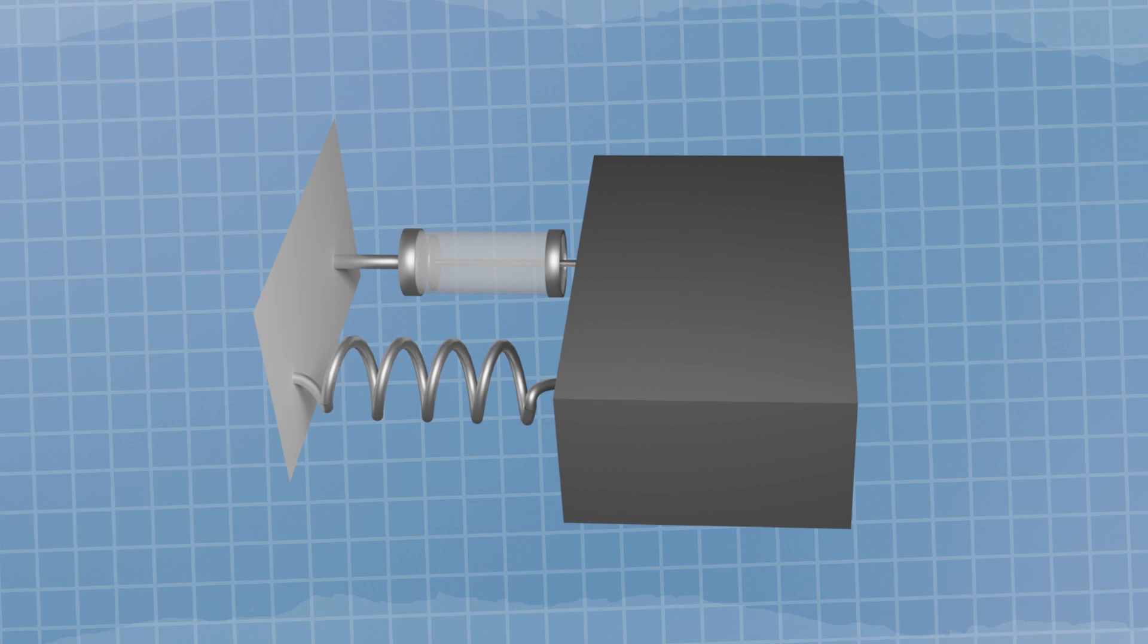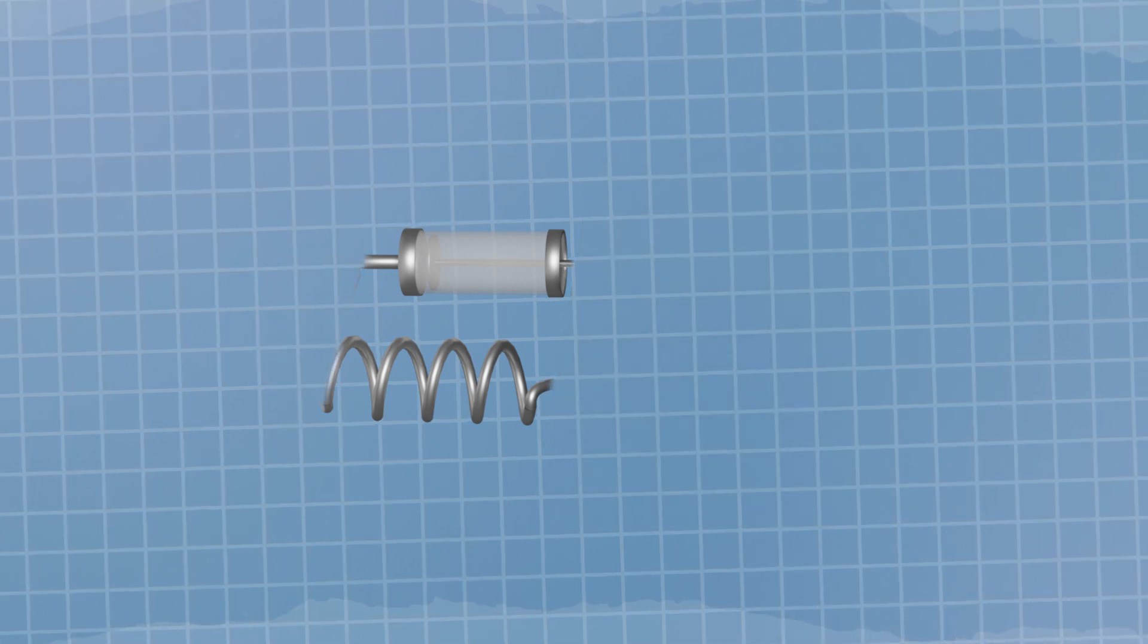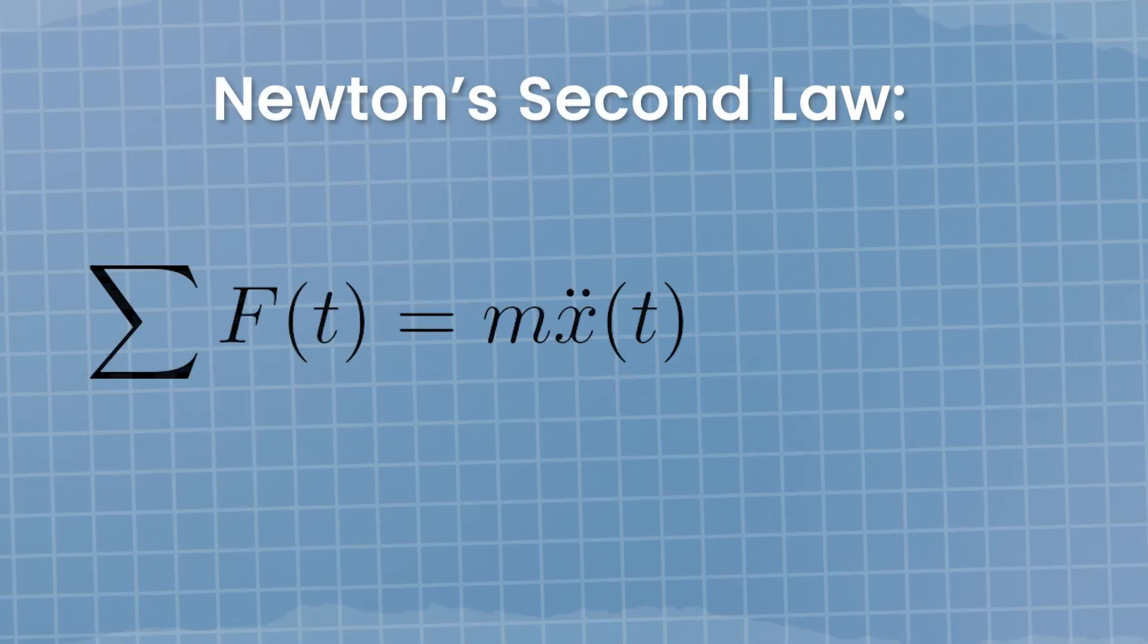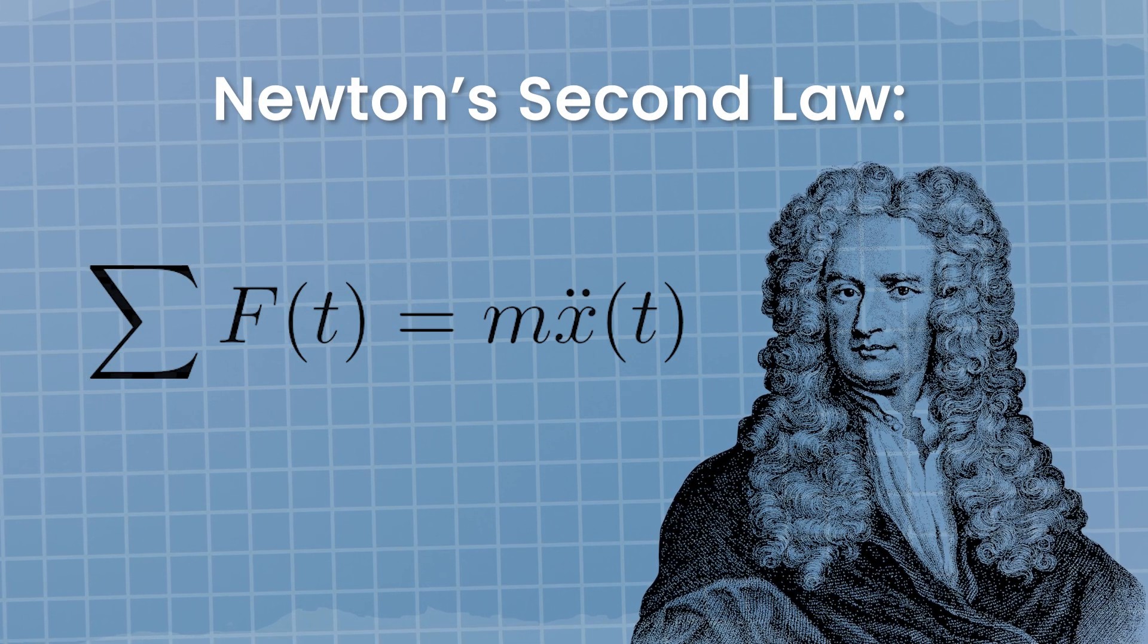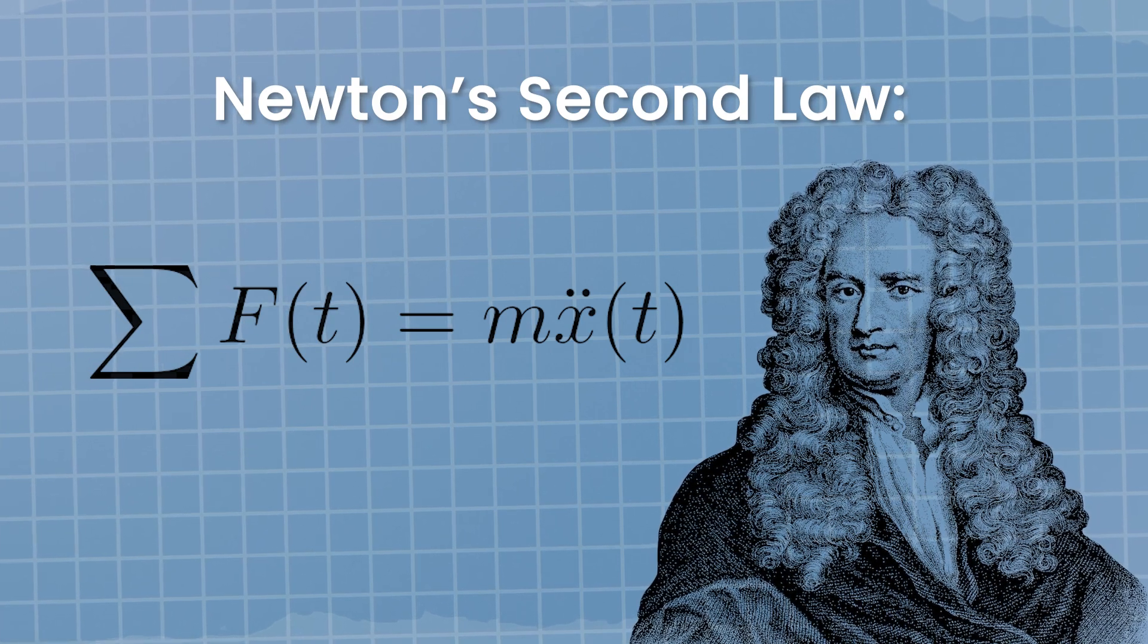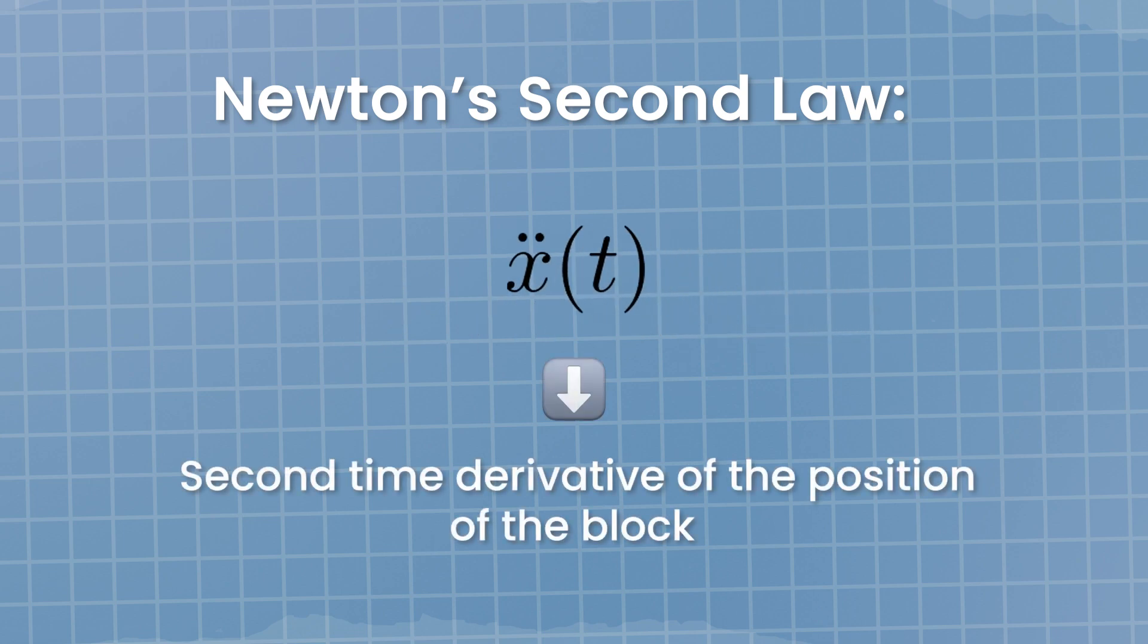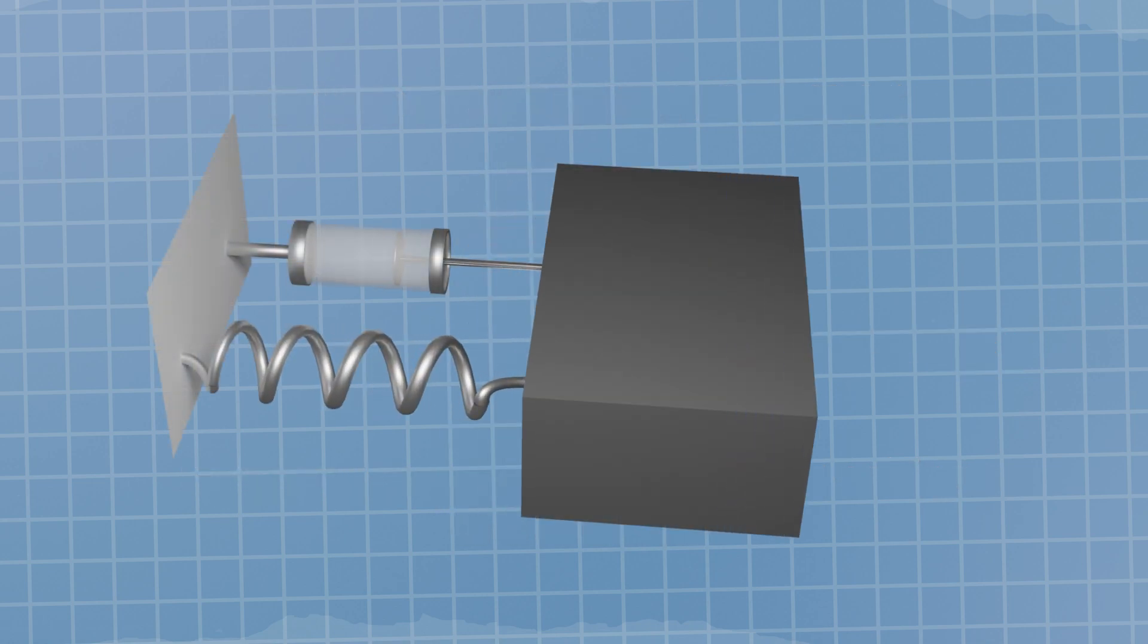We are trying to describe the motion of a block with a damper and a spring when an external force is applied to it. To do it, we start by writing Newton's second law: force equals mass times acceleration. Now we have to fill in the details. Straight away, the acceleration is a second time derivative of the position of the block.